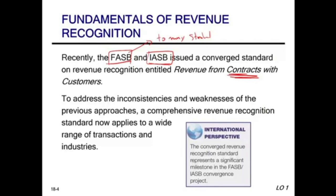Because of the global economy and companies operating globally, revenue is an important figure — as important as cash. They decided to have one revenue recognition standard that all companies follow, so revenue is recognized on the same playing field across the globe. This addresses the inconsistencies and weaknesses of the previous approach, where revenue was recognized when earned, realized, or realizable. Now a different, comprehensive standard applies to a wide range of transactions and industries.